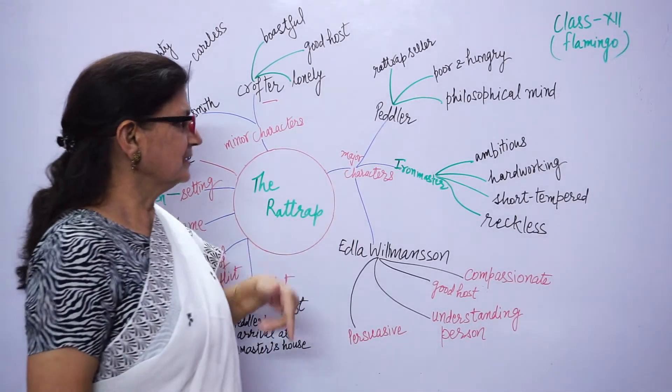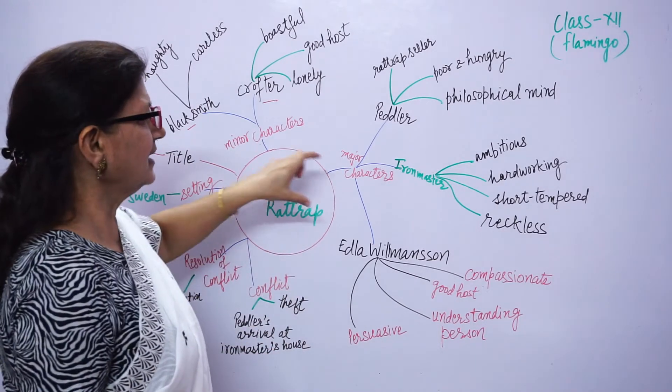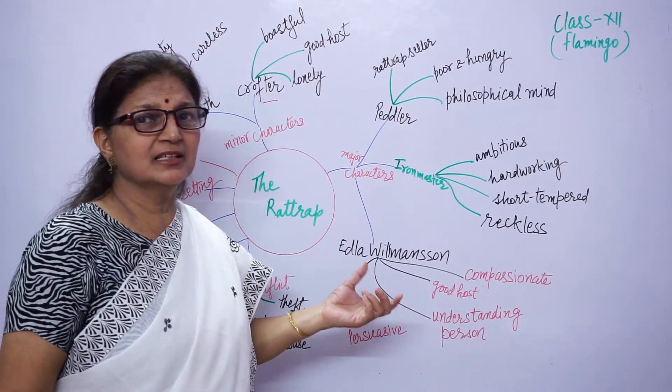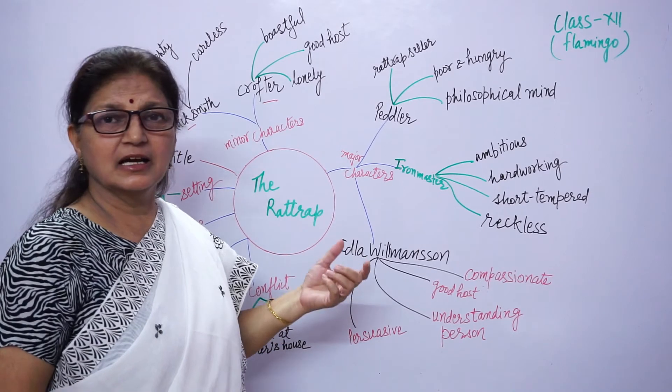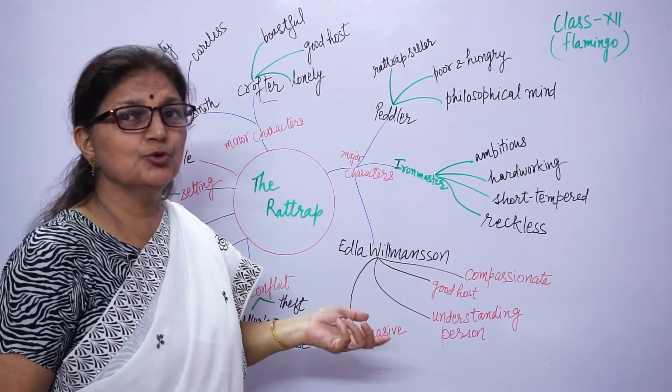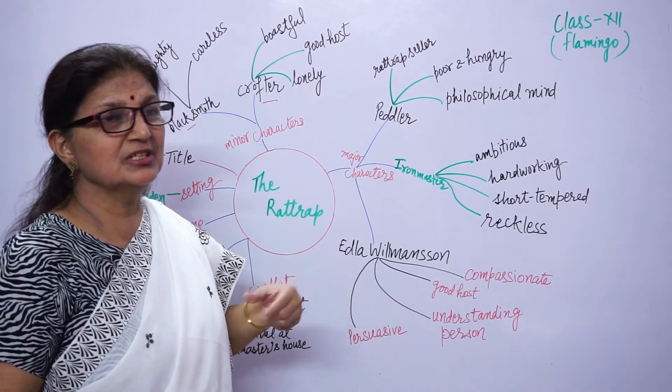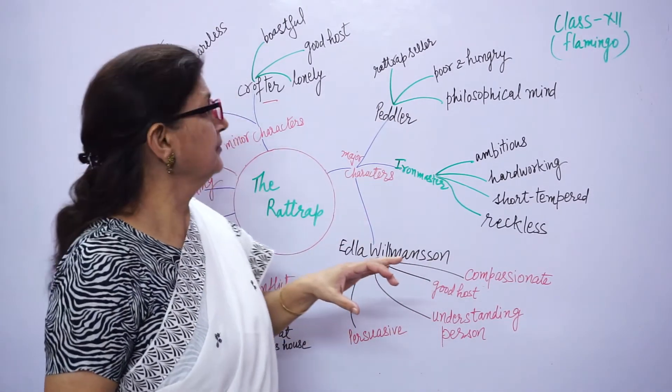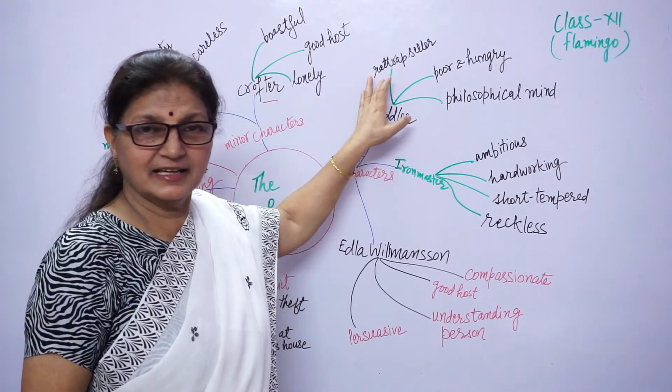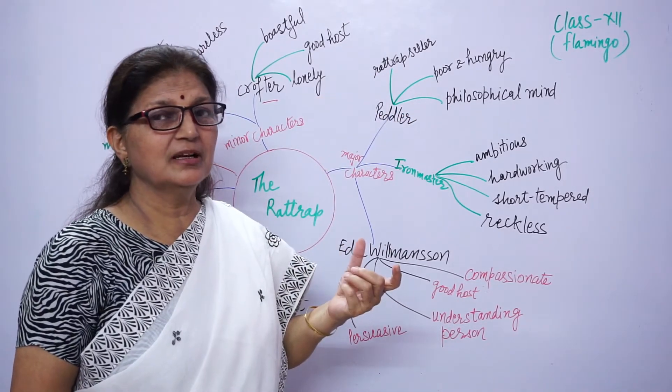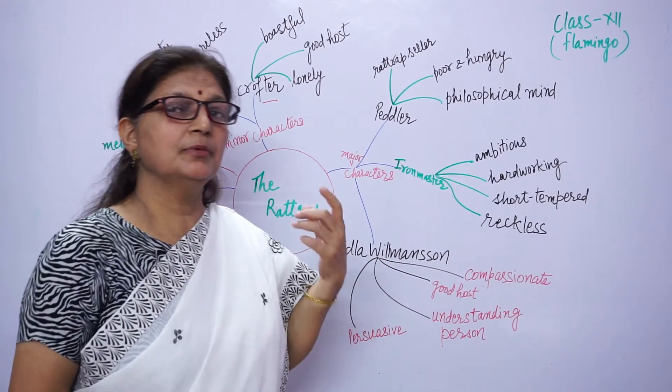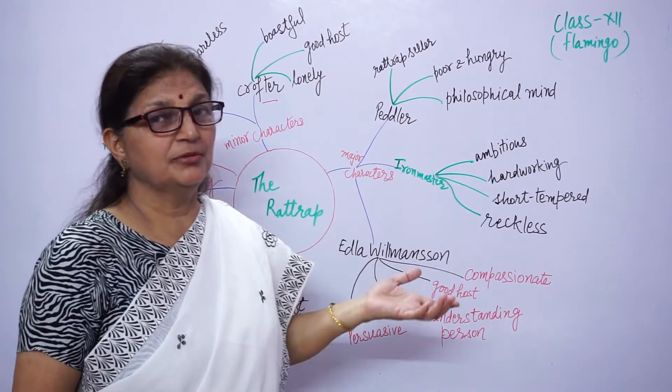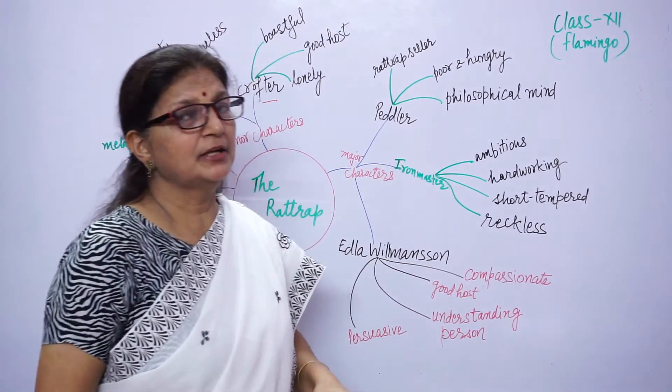Now, our major characters are three. A pivotal character is the peddler, the person who wanders from one place to another. The peddler is very poor, hungry. He earns his living by selling rat traps, but his business is not profitable. So sometimes he has to beg. He has a philosophical mind also.